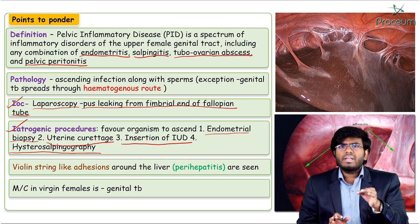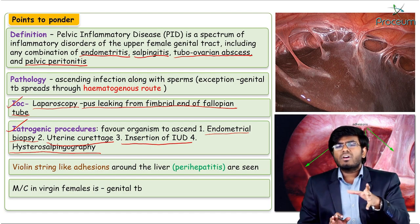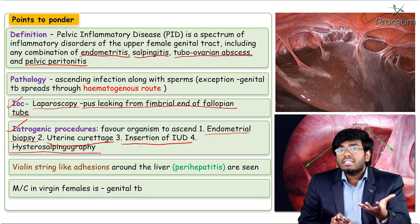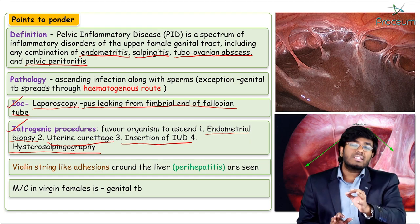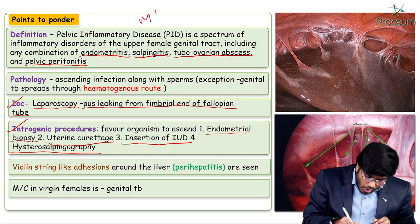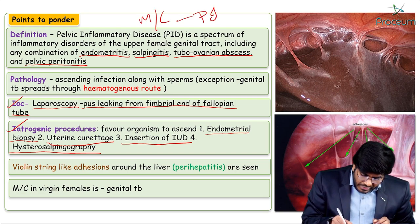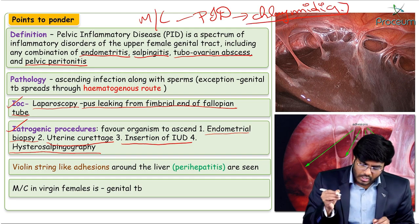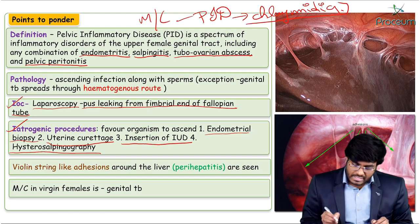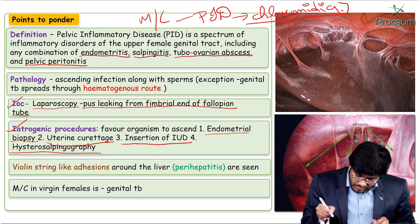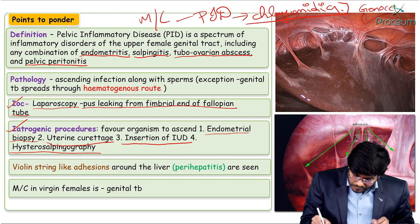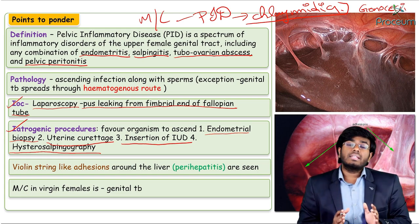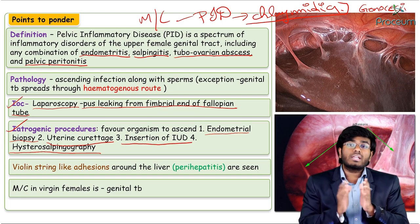The basic cause of PID is inflammation due to an organism. The most common organism causing PID is Chlamydia, followed by Gonococci (Gonorrhea). Other organisms include genital tuberculosis and Mycoplasma, among others.